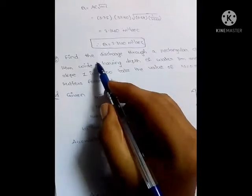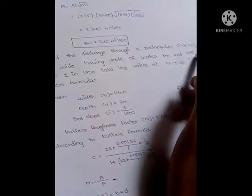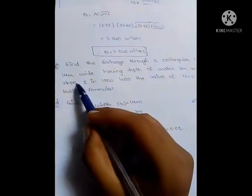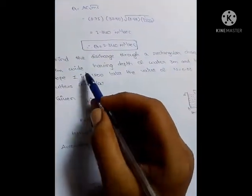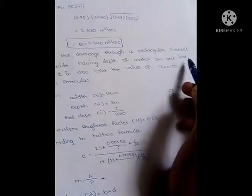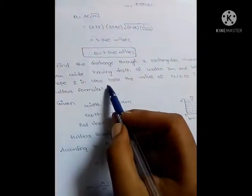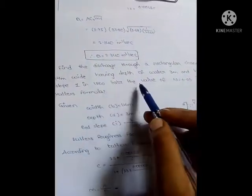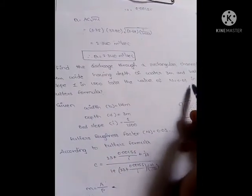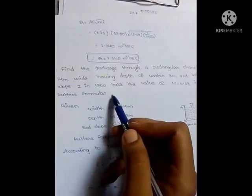Next problem: Find the discharge through a rectangular channel 14 meters wide, having a depth of water 3 meters, and bed slope 1 in 1500. Take the value of n equal to 0.03 in Kutter's formula.